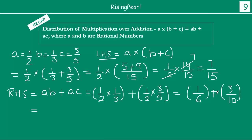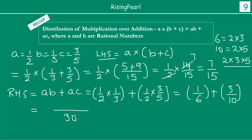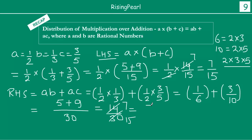Now we need to add 1/6 and 3/10. Between 6 and 10: 6 = 2×3 and 10 = 2×5, so the LCM is 2×3×5 = 30. Then: 6×5 = 30, so 5×1 = 5; and 10×3 = 30, so 3×3 = 9. We get (5+9)/30 = 14/30. Taking 2 as common factor: 14 = 2×7 and 30 = 2×15, so this becomes 7/15.